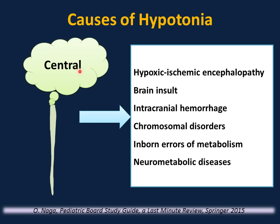Central causes of hypotonia: the most common is hypoxic ischemic encephalopathy. Other causes include brain insult, intracranial hemorrhage such as intraventricular hemorrhage in cases of extreme prematurity, chromosomal disorders such as Down syndrome — the most common presentation of Trisomy 21 is hypotonia — inborn errors of metabolism, neurometabolic diseases such as Zellweger syndrome or Leber syndrome, and peroxisomal disorders.